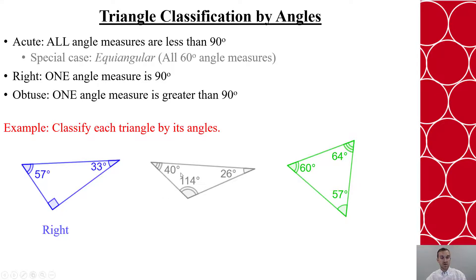In this second triangle, I have a measure that's greater than 90 degrees. So this is considered obtuse. In the third one, all three angle measures are less than 90 degrees. So this is acute.